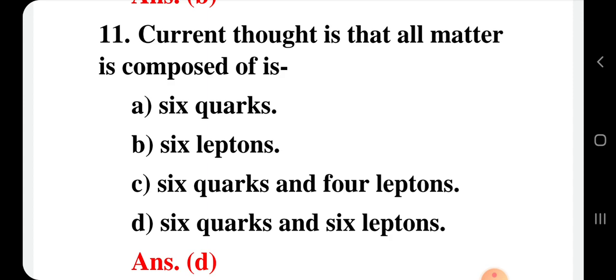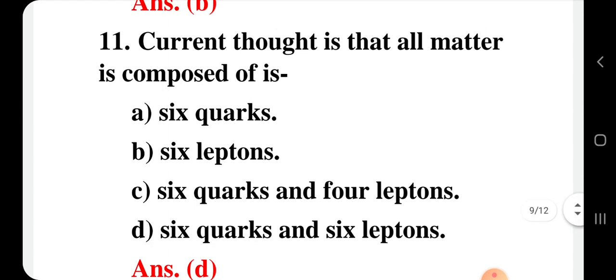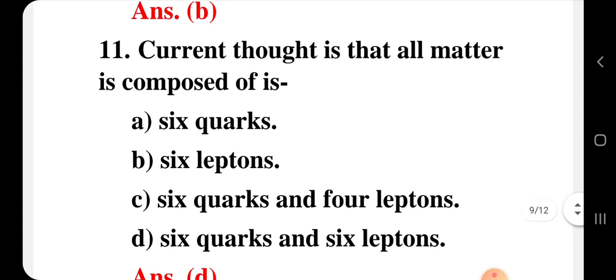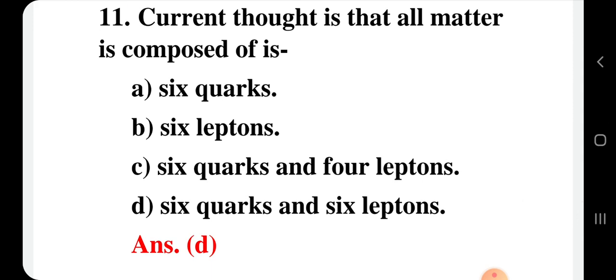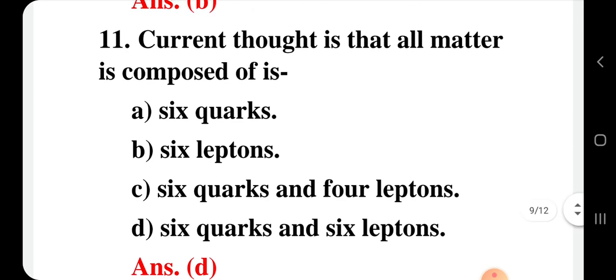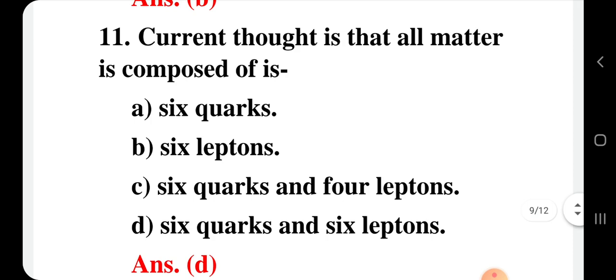Question number 11: The current thought is that all matter is composed of — current understanding is that all matter is composed of six quarks and six leptons. This was explained in detail in an earlier question where I described that there are 6 quarks and 6 leptons. The correct option for question 11 is option D.